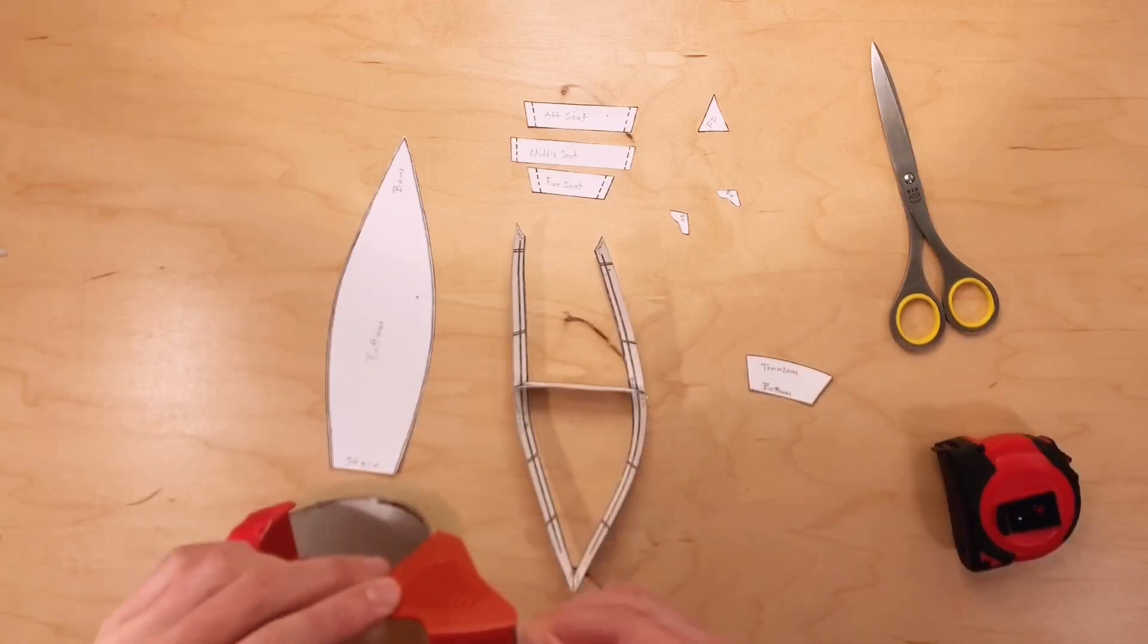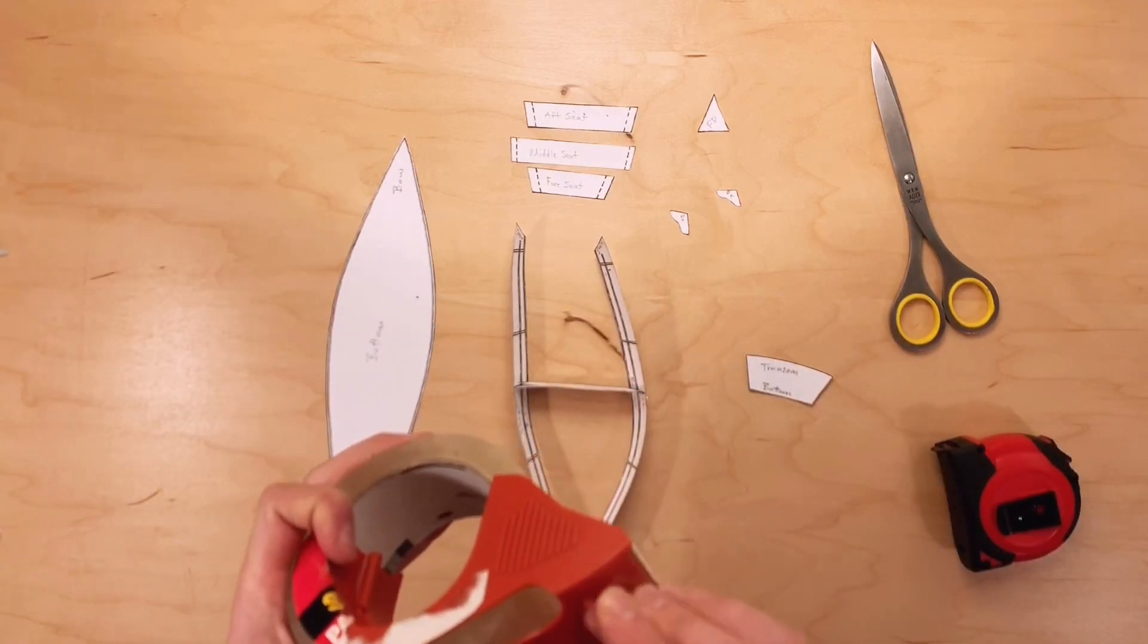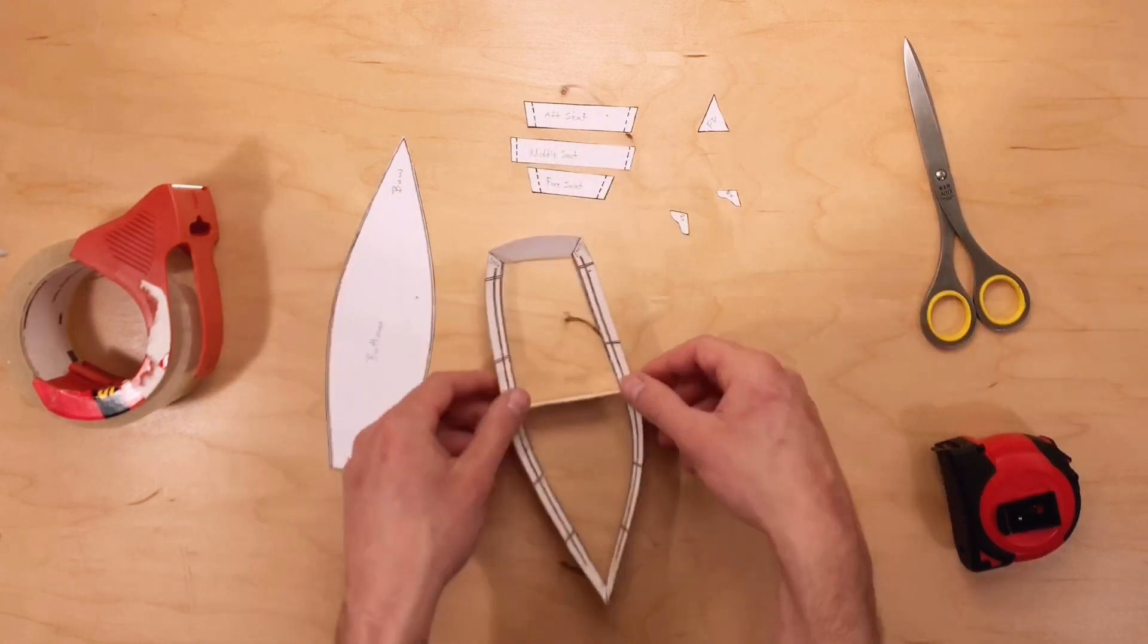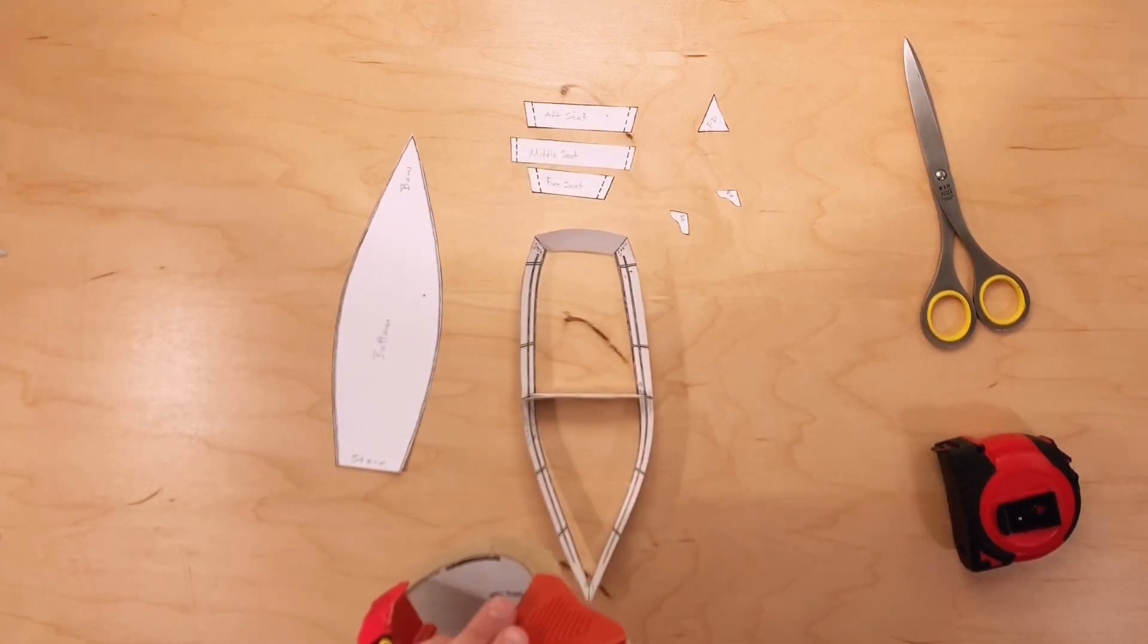Then comes the transom. Attach the transom at the stern of the boat. Make sure that you have it flipped the right way.